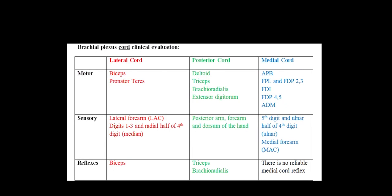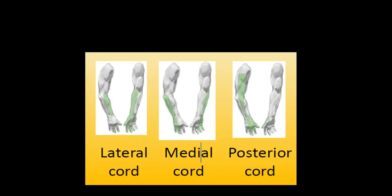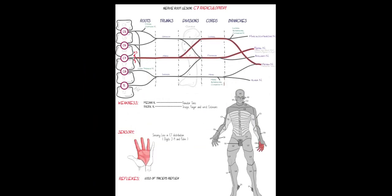It's worthwhile spending another moment on C7 radiculopathies since they're so common. The weakness is in radial muscles — triceps and finger extension — and also pronator teres from the median nerve contribution of C7. The sensory distribution of C7 is in the hand (digits 2-3-4 area). We'll also see some wrist extensor weakness and loss of the triceps reflex.